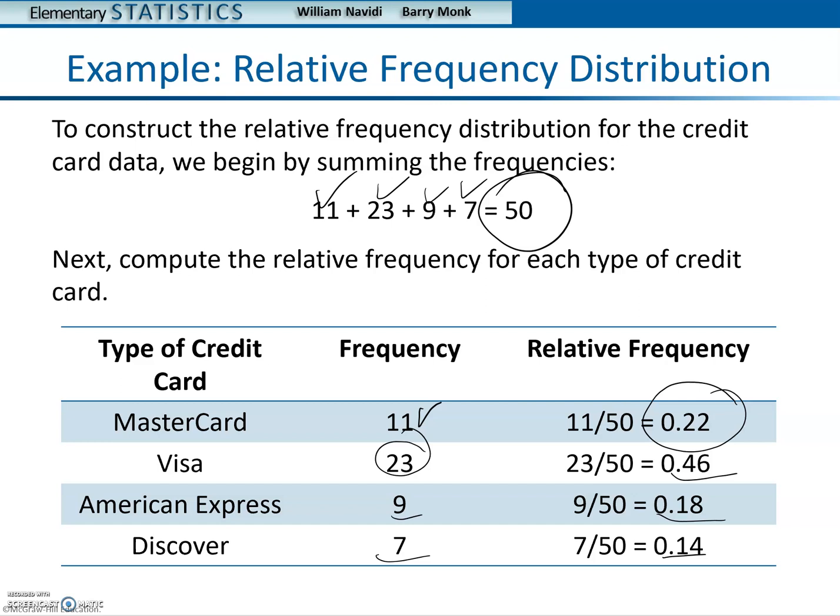Notice they have three columns. They name one as the type of credit card, they name one as the frequency, and they have the third column as the relative frequency.